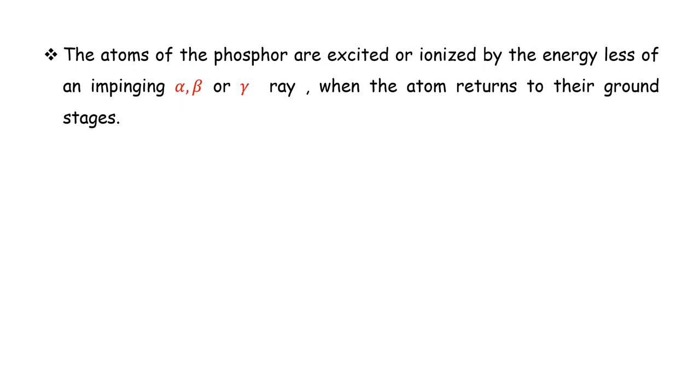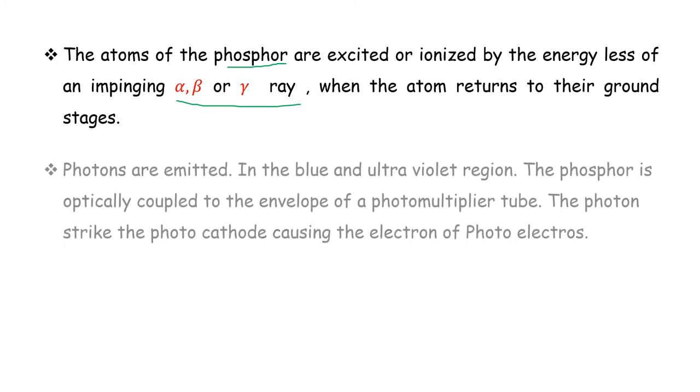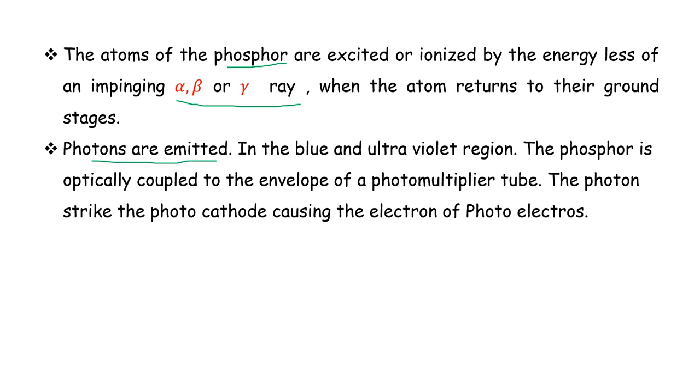The atoms of the phosphor are excited or ionized by the energy loss of an impinging alpha, beta, or gamma ray. When the atoms return to their ground state, the phosphor is excited and the atoms emit light in the blue and ultraviolet regions.